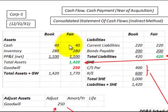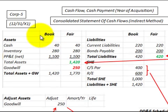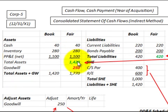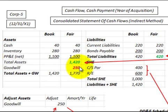The first thing we have to look at is the subsidiary corporation's balance sheet, based on a 12/31/X1 date. We have to look at the book value and the fair value to determine the fair value for the assets and liabilities. For this example, the book value equals the fair value for the assets and liabilities. The only adjustment related to the investment is goodwill of $250,000.